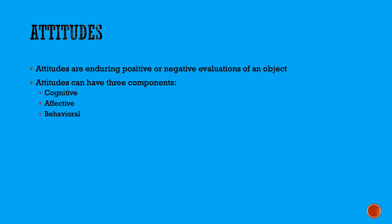There are three components to attitudes. The cognitive component of the attitude refers to the things that we know or believe about whatever the object is. In order to have an attitude towards something, you have to know that it exists and you have to have certain beliefs about it. This knowledge part of the attitude is referred to as the cognitive component.